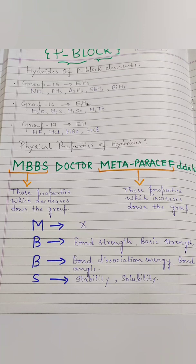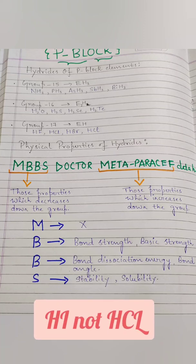Next is Group 16: H2O, H2S, H2Se, H2Te. Then Group 17: HF, HCl, HBr, HI. Note: by mistake HCr was written — please correct it to HCl. When I send the PDF on Telegram, I will send the corrected version. Don't worry, this was a writing mistake made in haste.